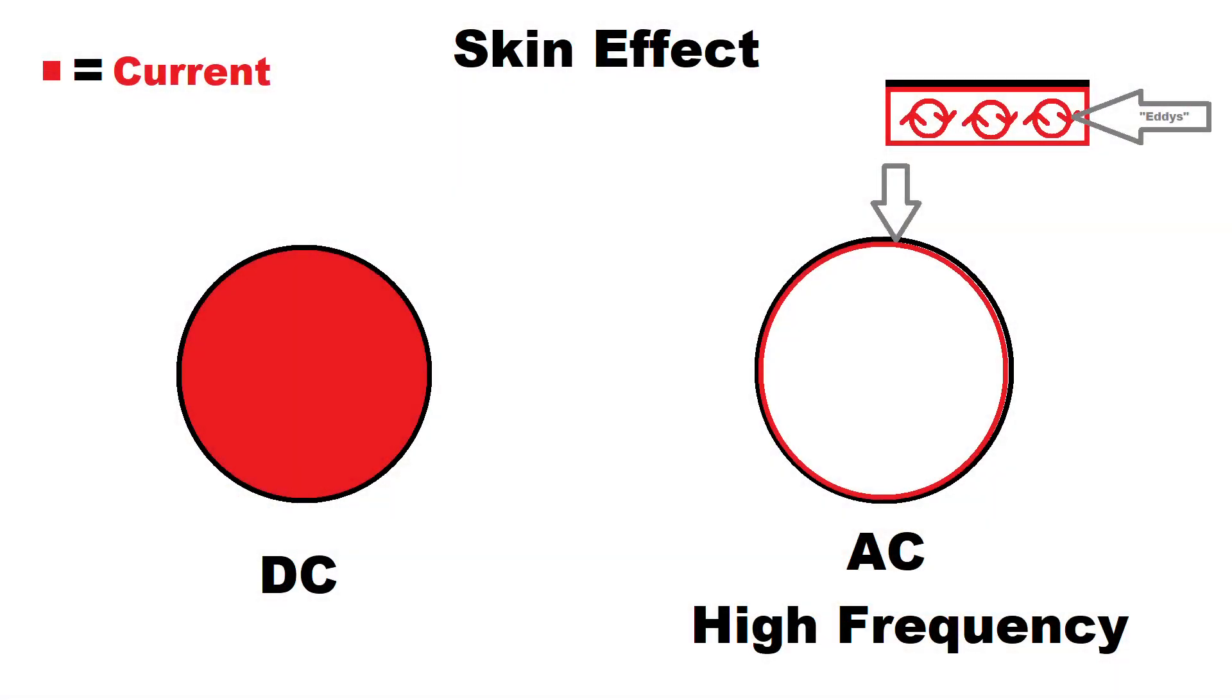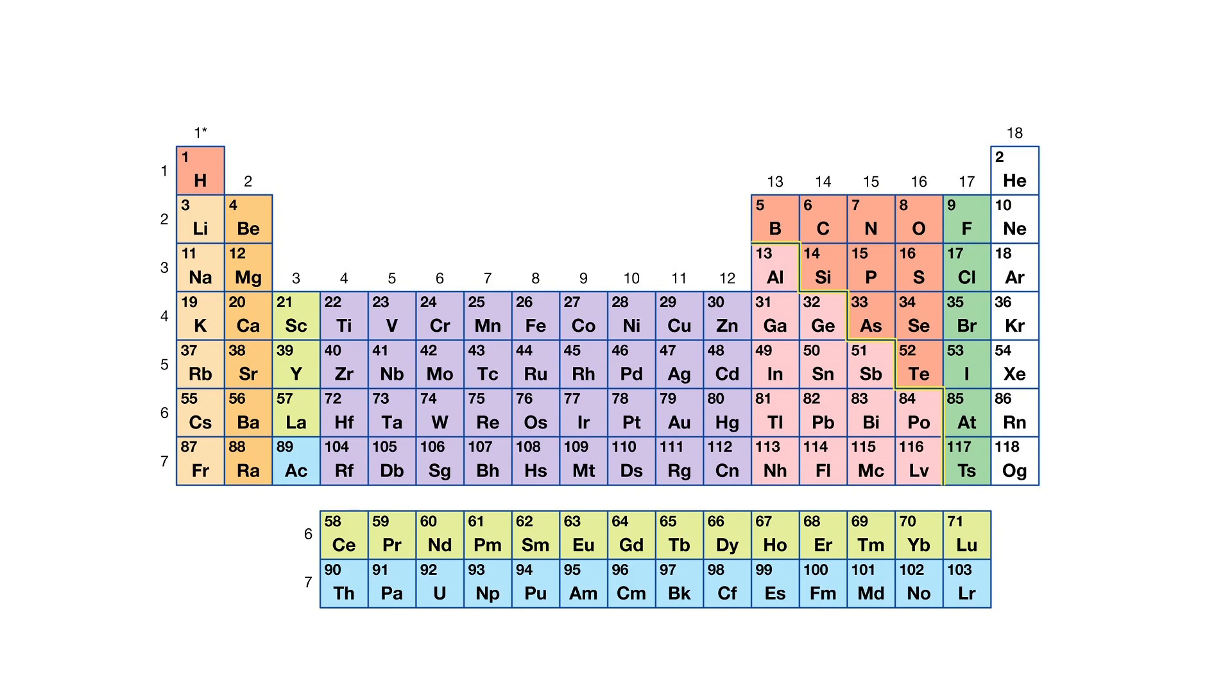Then there's also the skin effect. This ensures that the current flows only on the surface of the object. This increases the effective resistance of the metal and the heating effect is thus further enhanced. By the way magnetic metal such as iron heat up the most.